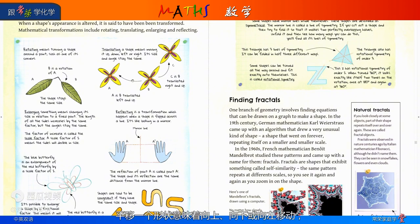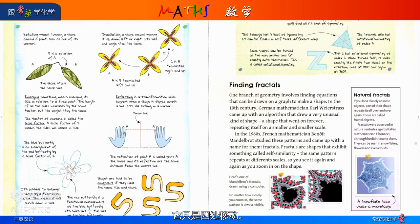Translating a shape means moving it up, down, left, or right. Its size and angle stay the same. It's just moving it around.